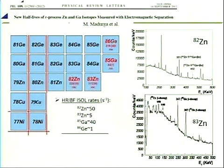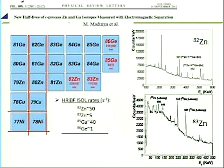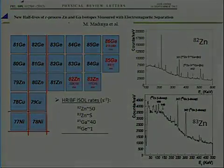In both cases we could identify the species of interest: by looking at a 351 keV gamma line previously known in the decay of selenium-81, and by observing a new gamma line not seen in any other element of mass 83, confirming it belongs to germanium-83.